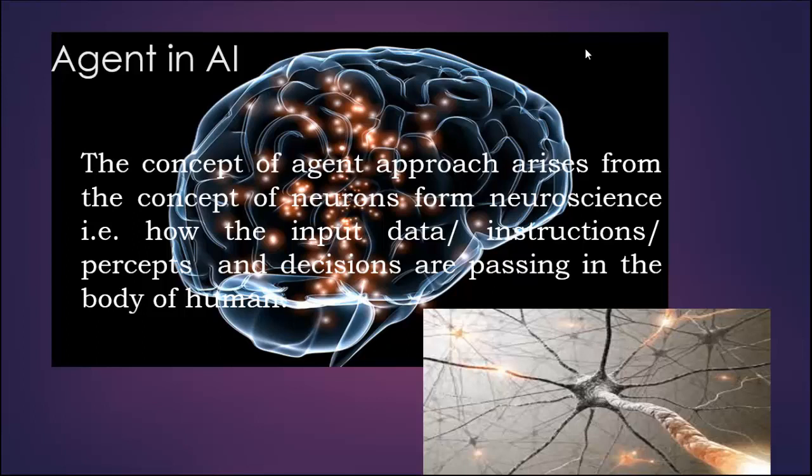In AI we are doing simulation of human into machine. Because human mind is taking the input in terms of perception, so in AI we are supposed to call input as percept. Perception about the same object may differ from person to person.